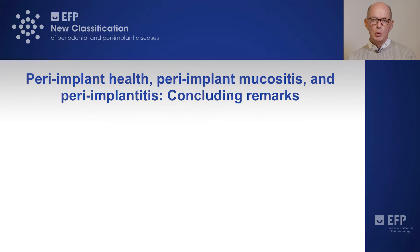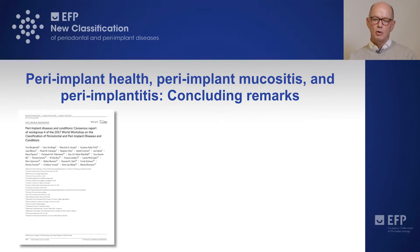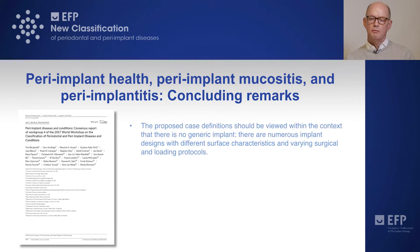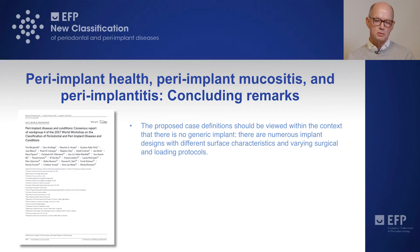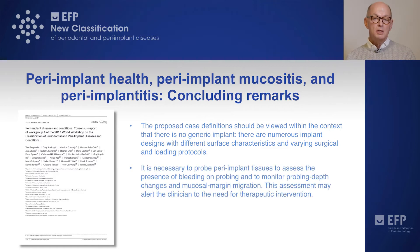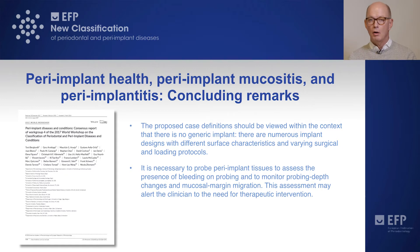There are some important concluding remarks to make with regard to the consensus report. The proposed case definitions should be viewed within the context that there is no generic implant — that is, there are numerous implant designs with different surface characteristics and also quite varying surgical and loading protocols among clinicians. It is necessary to probe peri-implant tissues to assess the presence of bleeding on probing and also to monitor probing depth changes and potential migration of the mucosal margin.